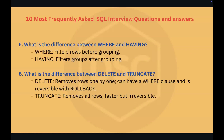Question number five: what is the difference between WHERE and HAVING? The WHERE clause is used to filter rows before any grouping occurs, and it is used with individual rows. HAVING filters groups of rows after grouping is done, and it is used with aggregate functions.